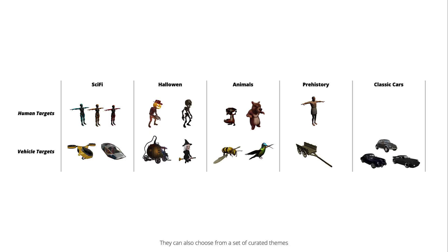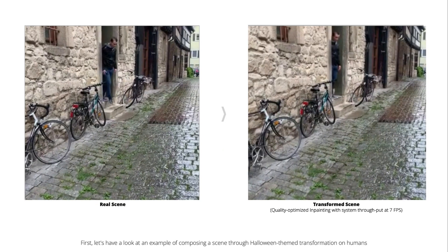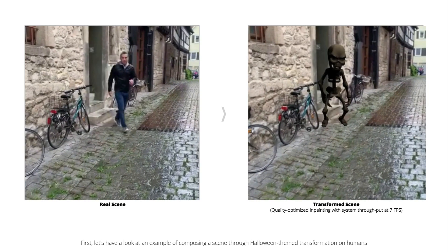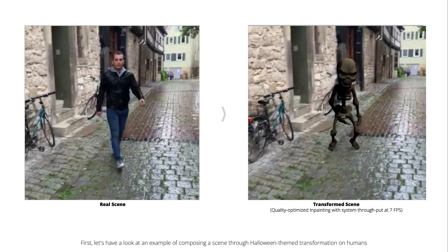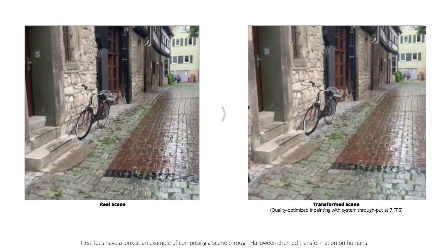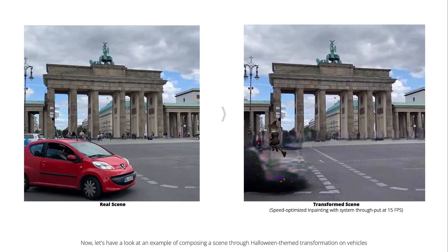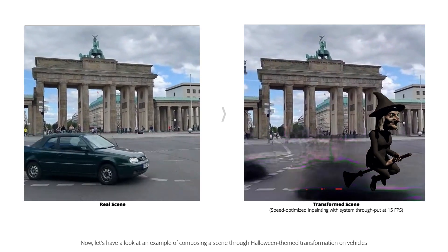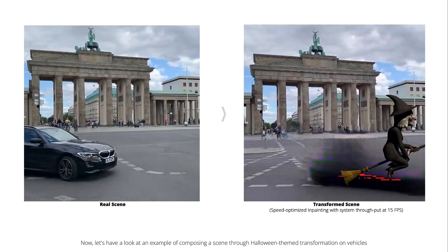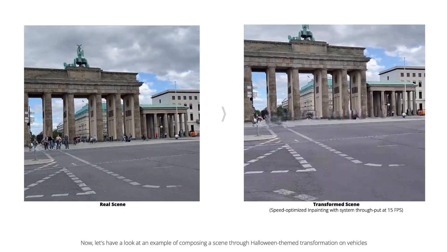Users can choose from a set of curated themes. First, let's have a look at an example of composing a scene through Halloween theme transformation on humans. Now let's have a look at an example of composing a scene through Halloween theme transformation on vehicles.